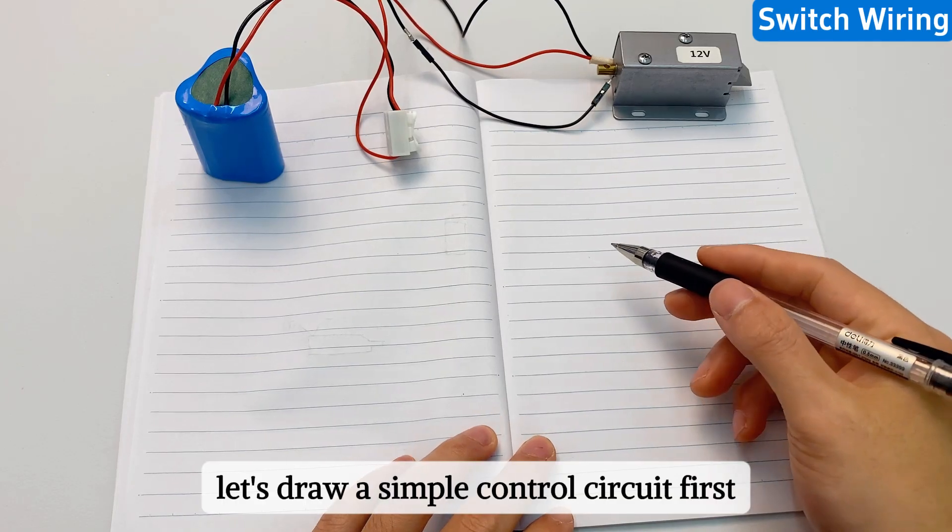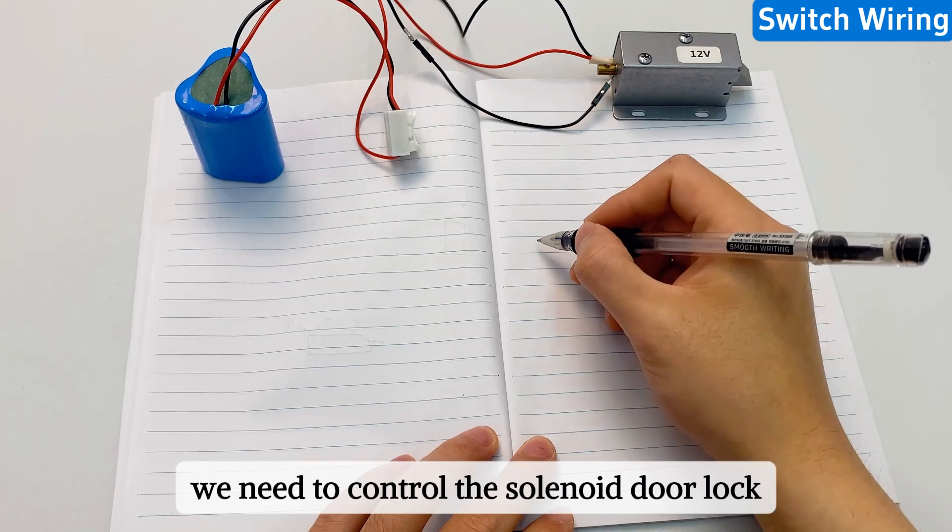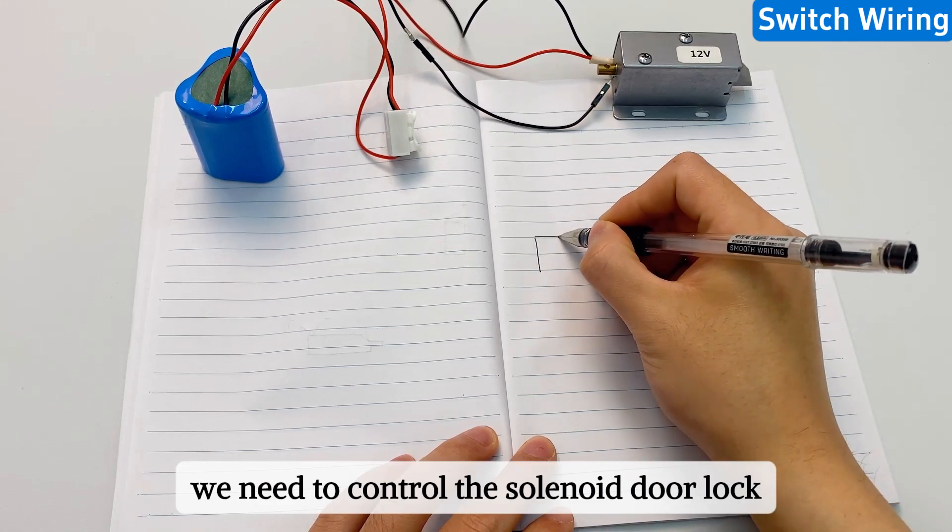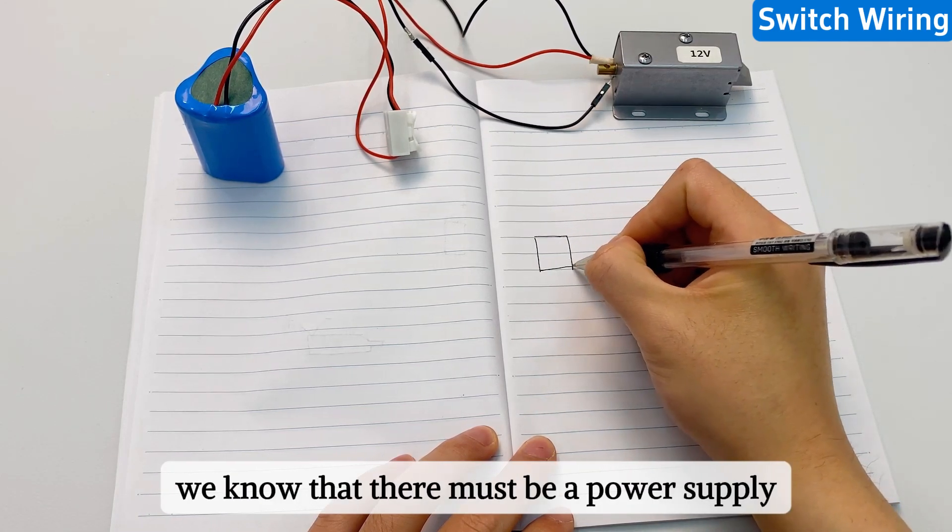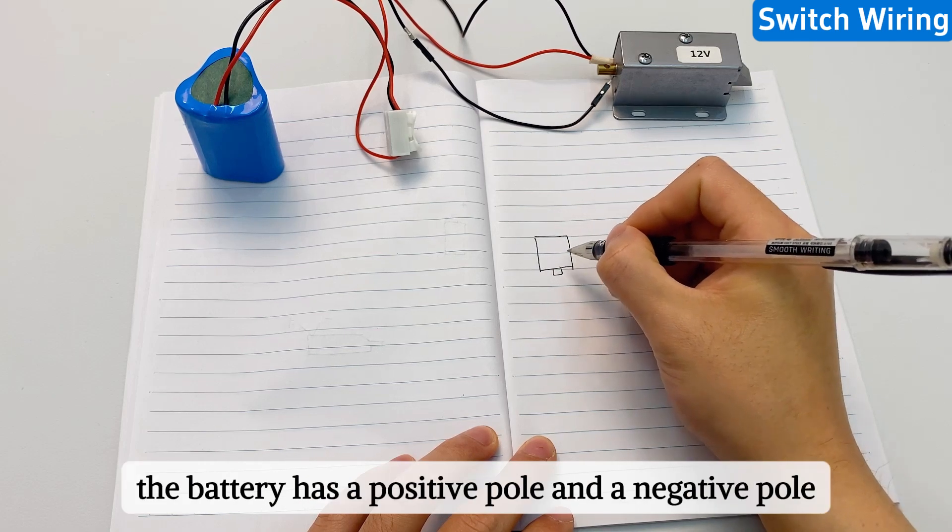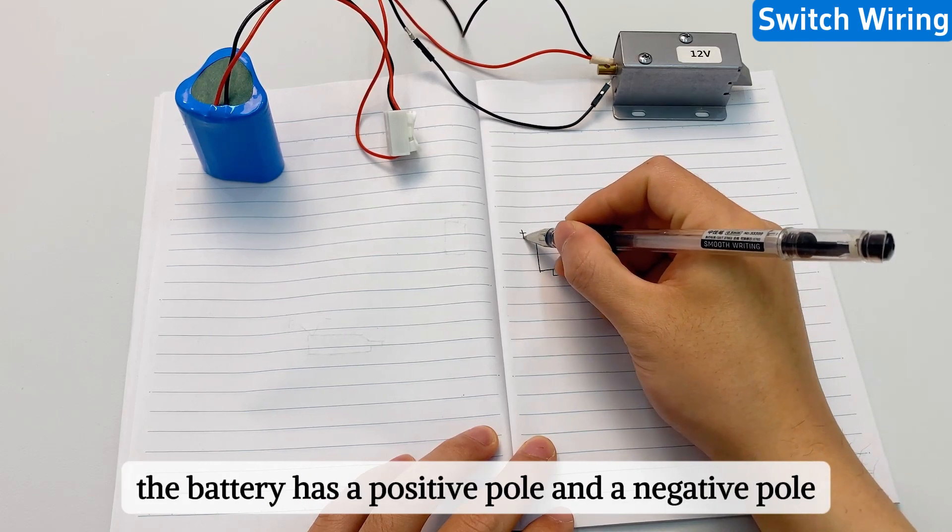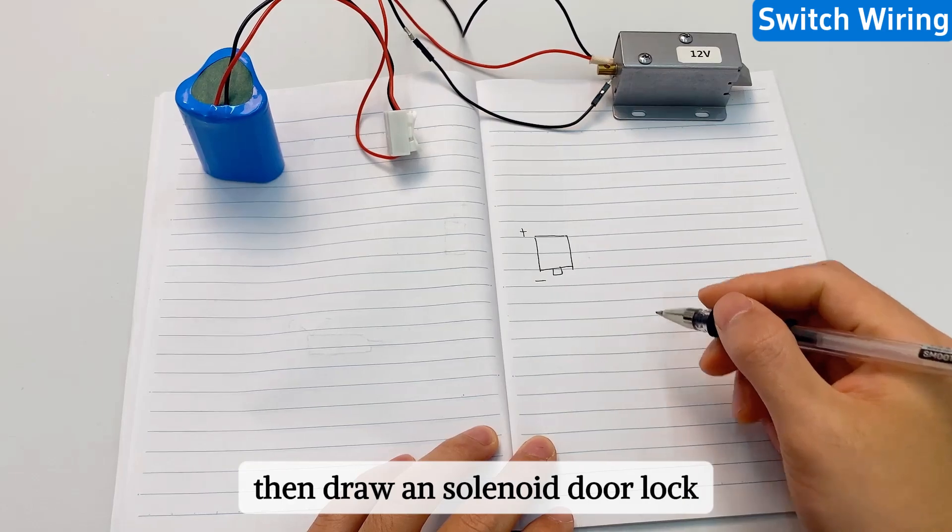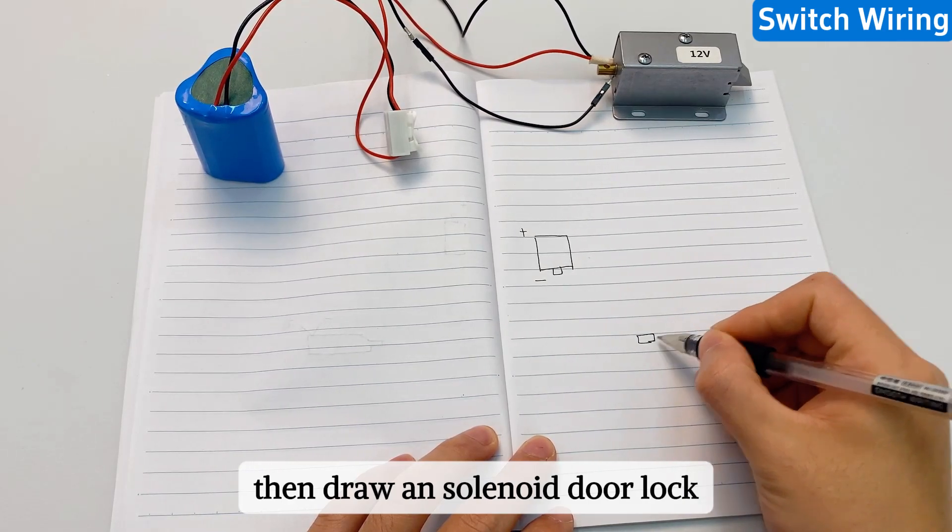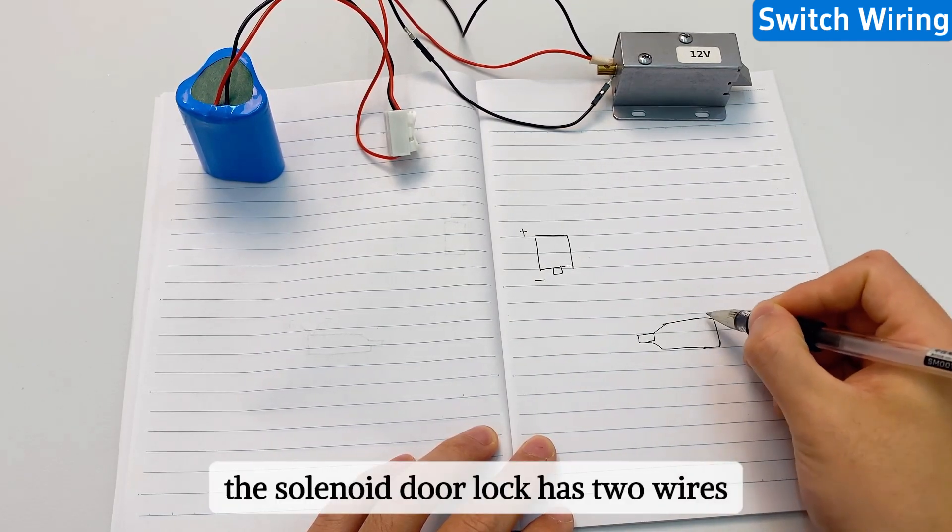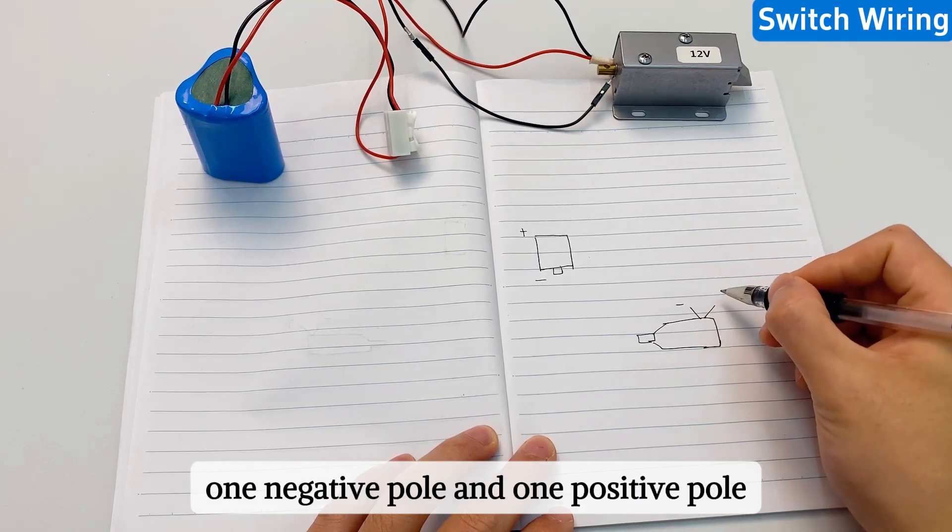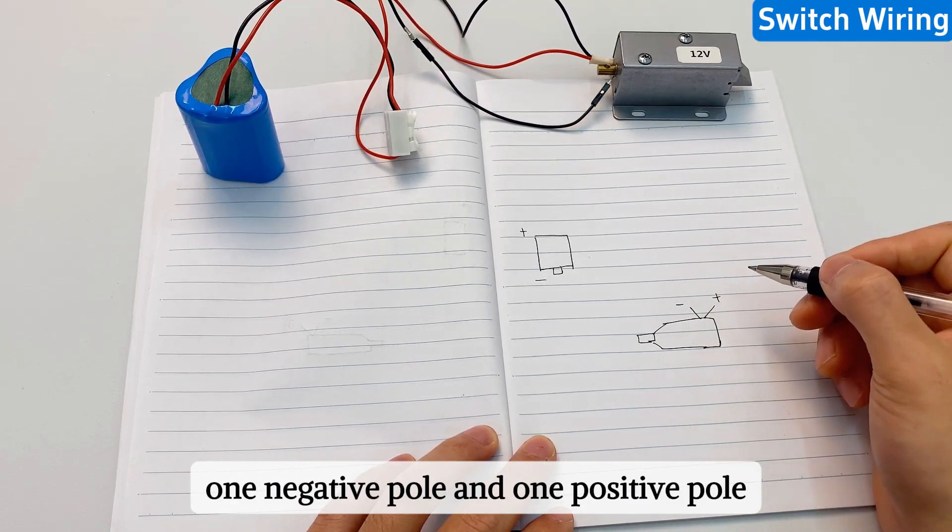Let's draw a simple control circuit first. We need to control the solenoid door lock. We know that there must be a power supply. The battery has a positive pole and a negative pole. Then draw the solenoid door lock. The solenoid door lock has two wires, one negative pole and one positive pole.